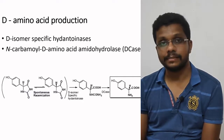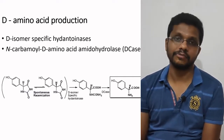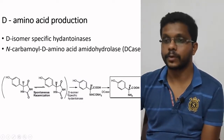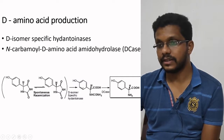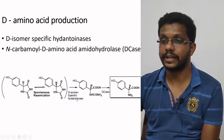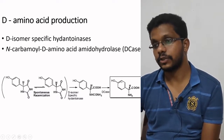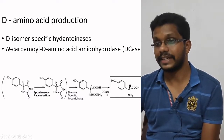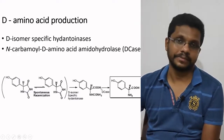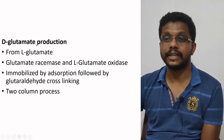Using immobilized enzymes, we can actually produce D-amino acids from L-amino acids. It is a two-step process. First, the L-amino acid is converted into an intermediate by using a D-isomer specific hydantoinase. This intermediate is again acted upon by D-case, which will convert it into the D-amino acid.